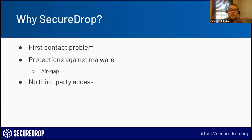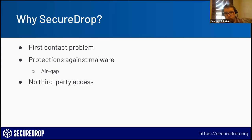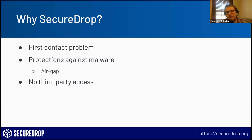The computer used to decrypt those submissions uses a special operating system called Tails that is able to revert to a known good state on reboot. So if you received a file with malware on it, as soon as you powered off the system that malware would disappear — it reverts to a known good state. So even if you had malware, as soon as you reboot, it's as if it never happened. These protections provide layers of safety for journalists working with submissions from strangers on the internet.